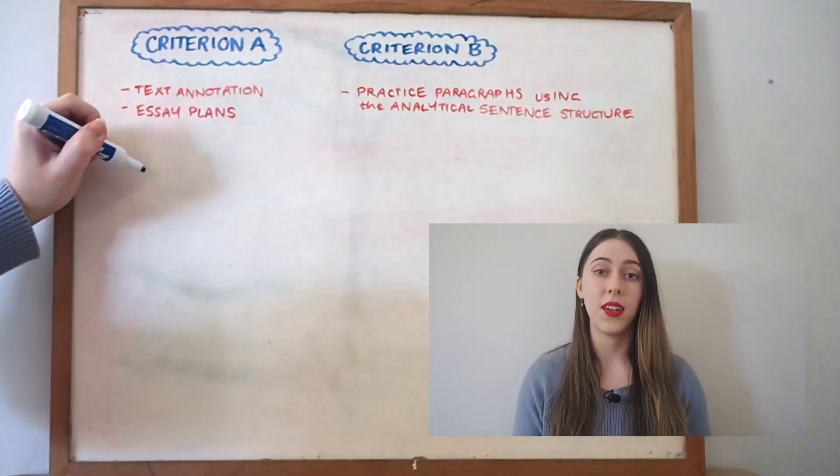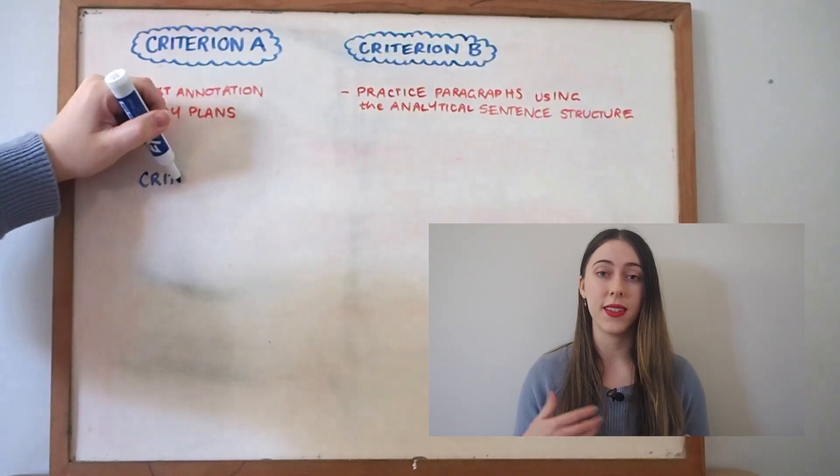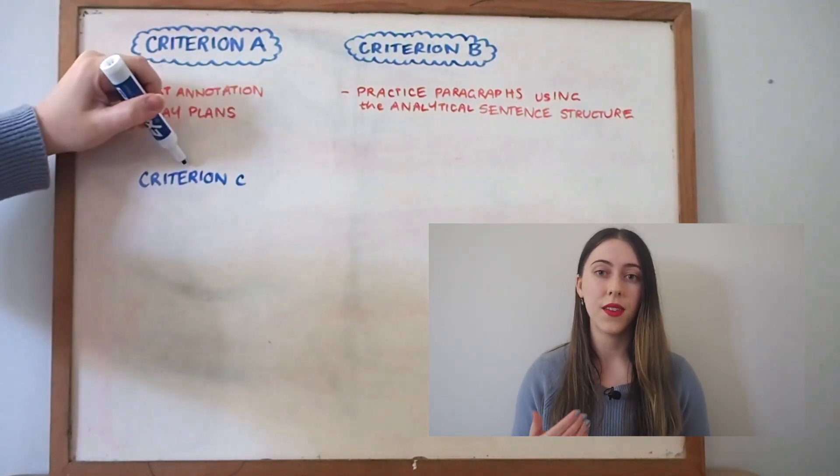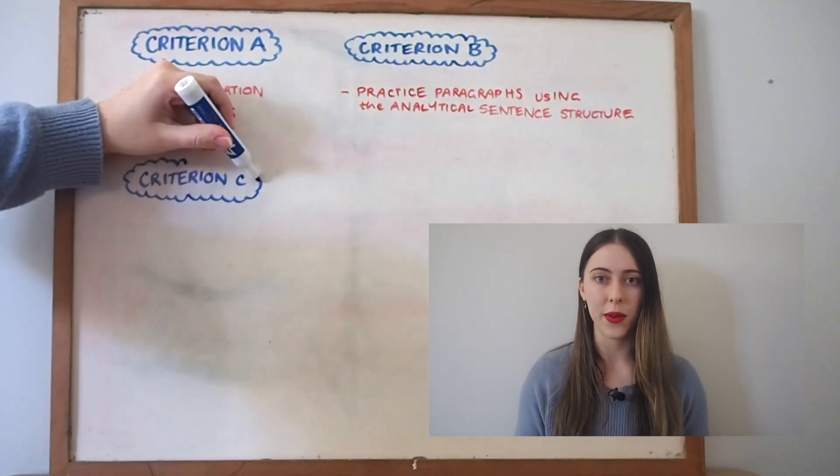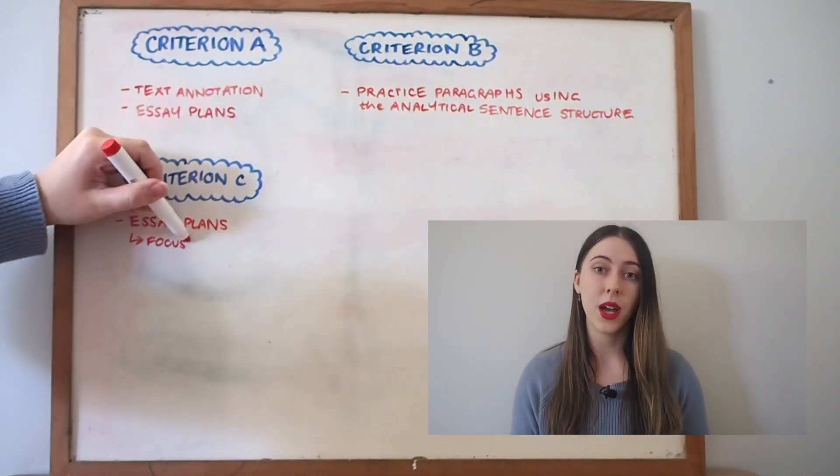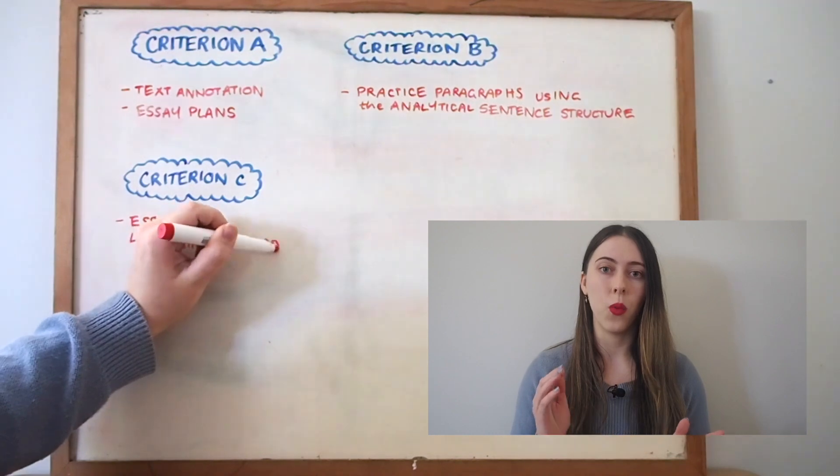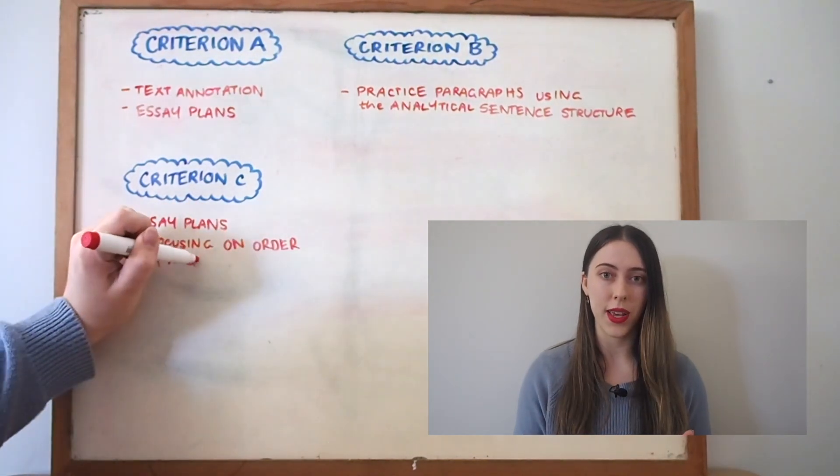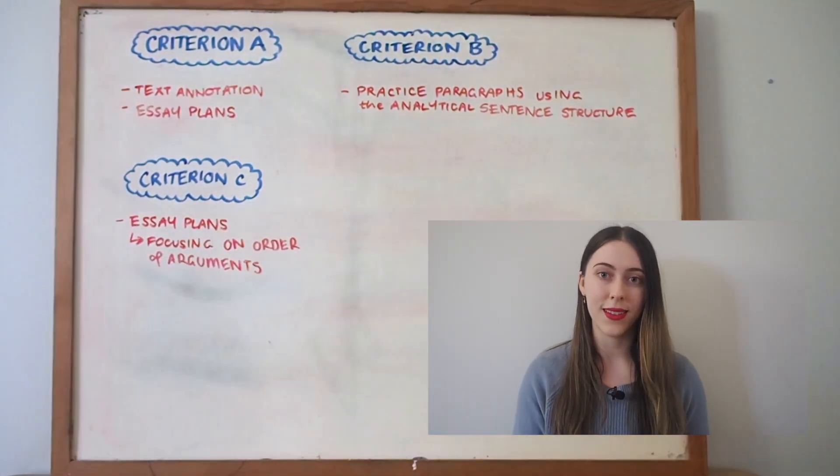And then for criterion C which assesses the structure of your response, there were two exercises that I would use. The first one was again writing out essay plans but this time really placing the focus on what order the arguments should be in to make the most sense and flow. So for me most of the time I found that if I put my nature of paragraphs first and then followed them with my effect of paragraphs, then that would create the best flow in my argument.